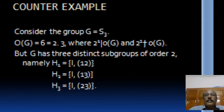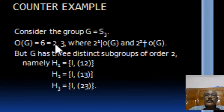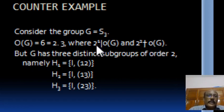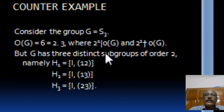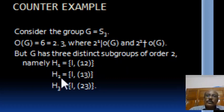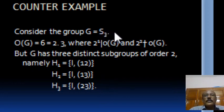This uniqueness result holds only for abelian groups and is not true for non-abelian groups. For example, consider G equal to S3, a non-abelian group of order 6. Since 6 equals 2 times 3, the highest power of 2 dividing 6 is 1. In an abelian group there would be a unique subgroup of order 2, but in S3 we can find three distinct subgroups of order 2: H1 equals {I, (12)}, H2 equals {I, (13)}, H3 equals {I, (23)}. So the uniqueness part does not hold for non-abelian groups.